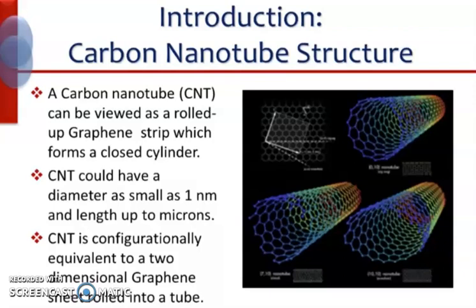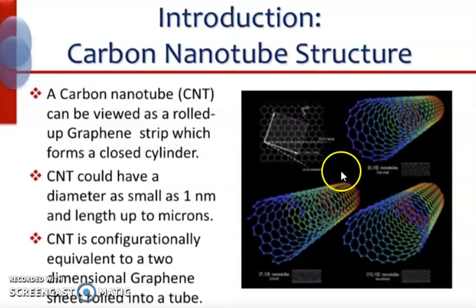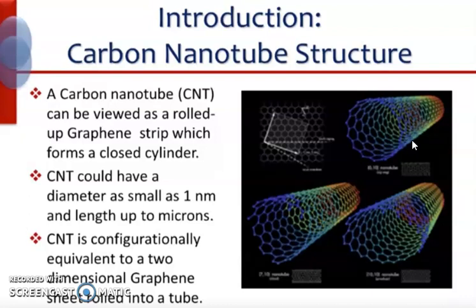Carbon nanotubes are very special nanostructures used in nanosensor technology. A carbon nanotube is a tube-shaped material made of carbon with a diameter measured at the nanometer scale. It is a rolled-up graphene strip forming a closed cylinder, and the tube length can be many millions of times longer than its diameter.